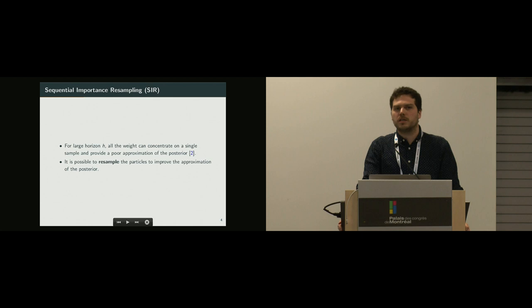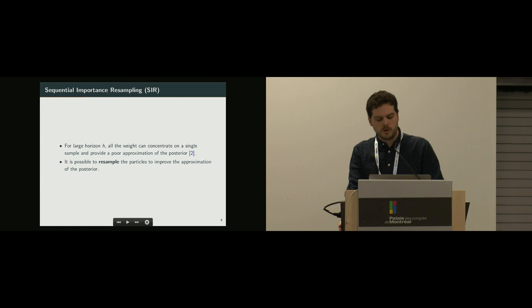However, sequential importance sampling is not very good for large horizon H, as you're going to collapse on a single particle, and you're going to have a poor approximation of your posterior. So a simple way to remedy that is to use sequential importance resampling. So we're going to resample the most promising particles and then spend more computation on it.